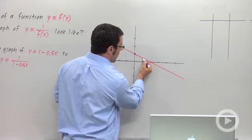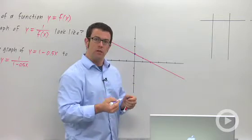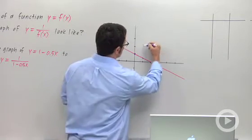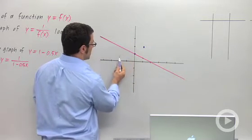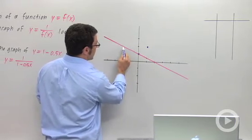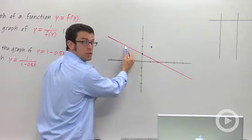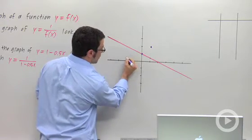This point has a y coordinate of a half. The reciprocal of that is 2. So the reciprocal graph will pass through this point. Let's pick a nice integer. Here, we're going to have a y coordinate of 2. So the reciprocal will have a y coordinate of 1 half.